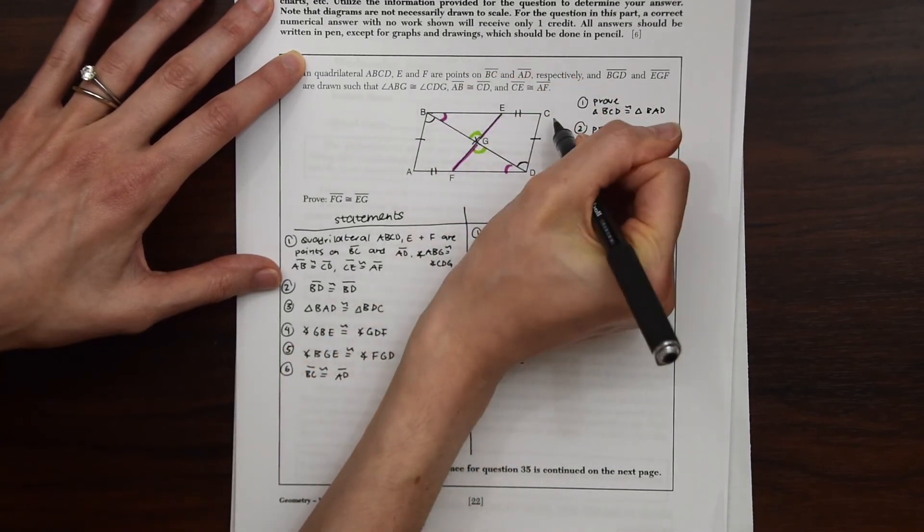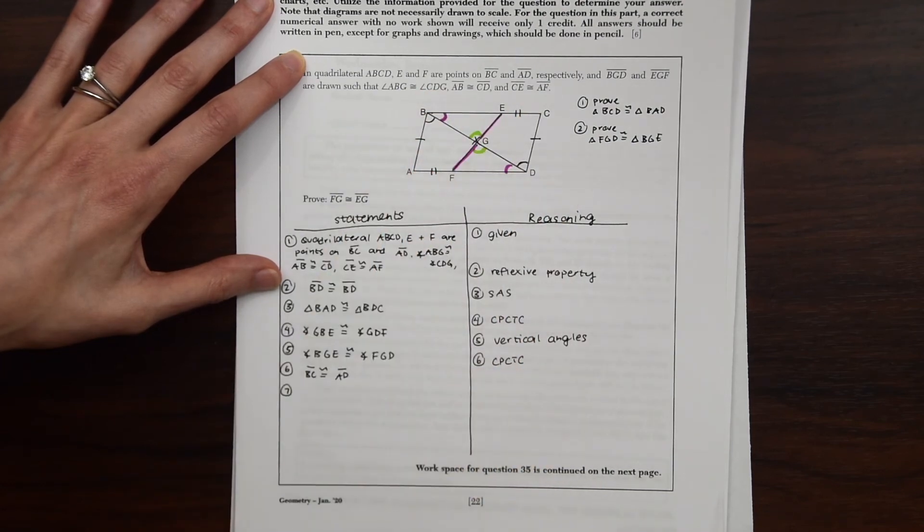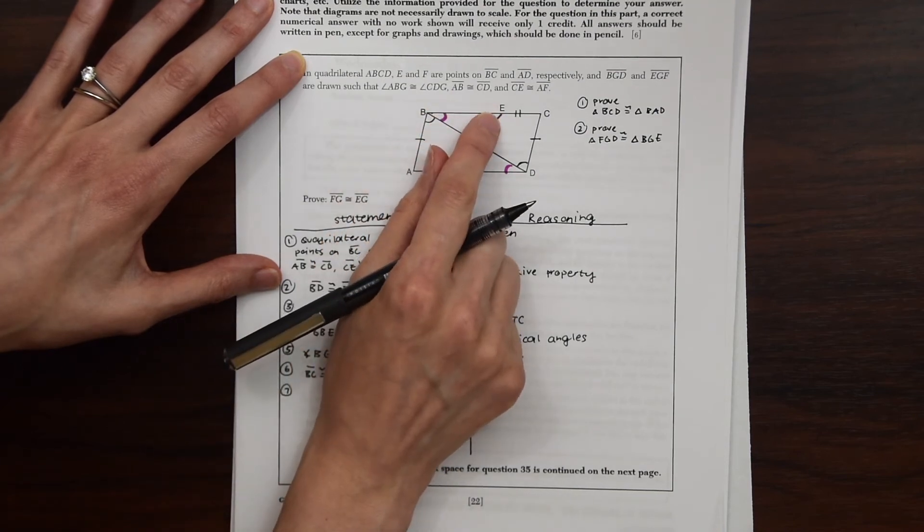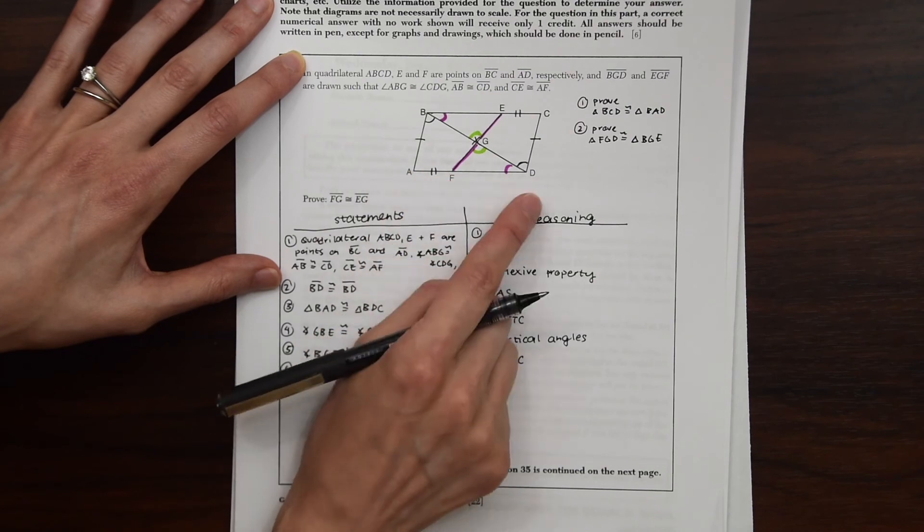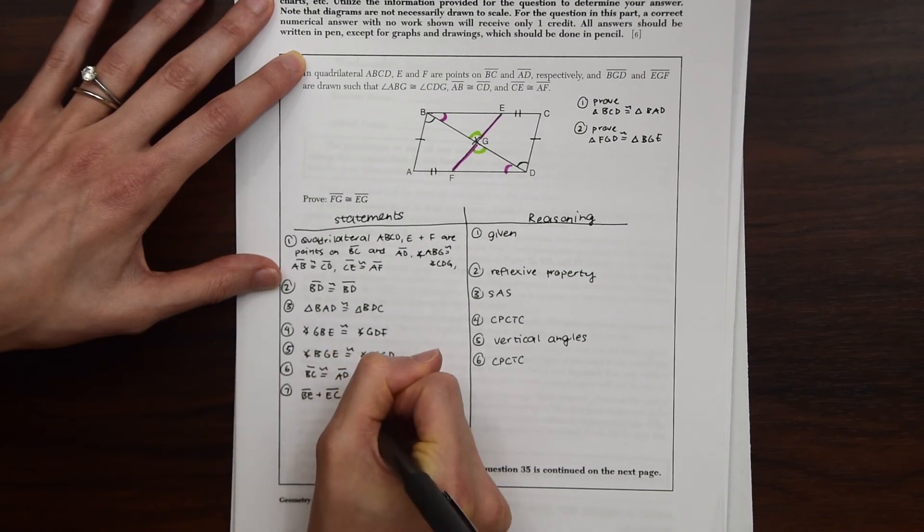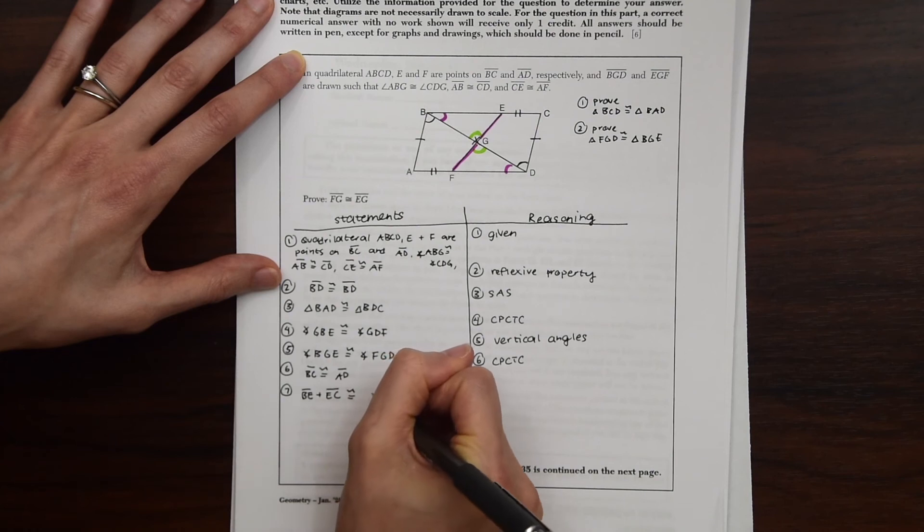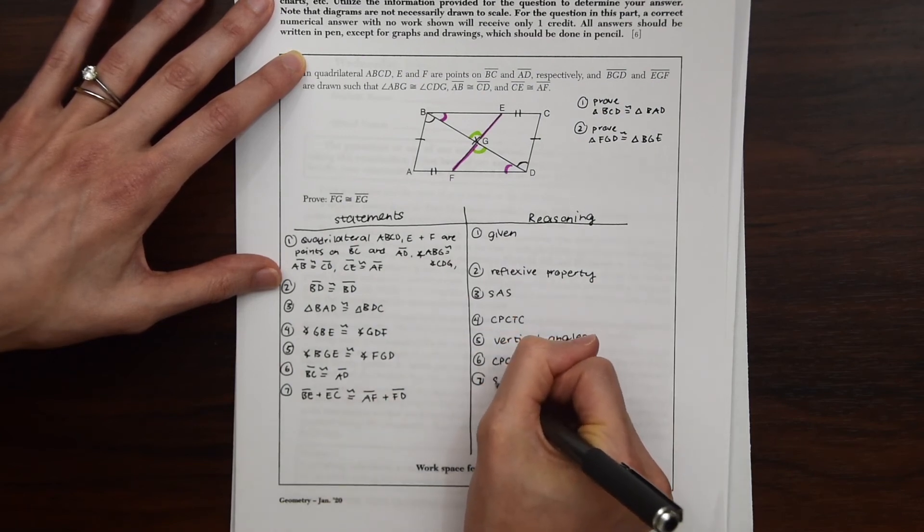So we know that that whole thing is congruent, this length and this length. So because of that, we know that BE plus EC is going to be congruent to AF plus FD. So let's write that out, BE plus EC is congruent to AF plus FD. And this is based on segment addition.